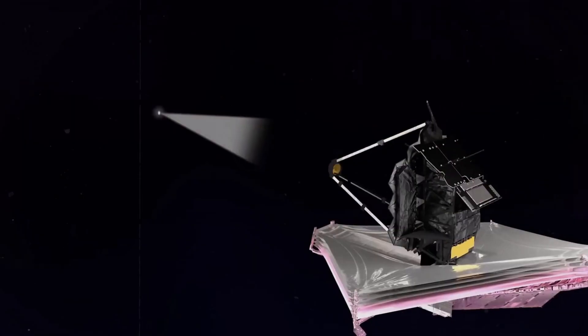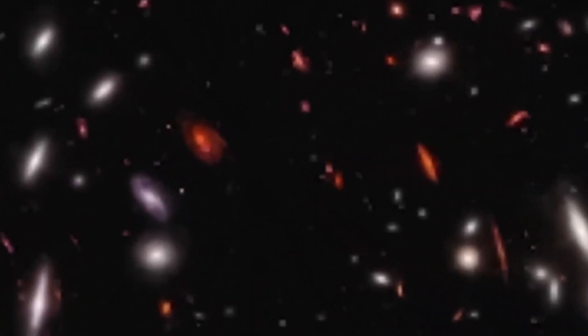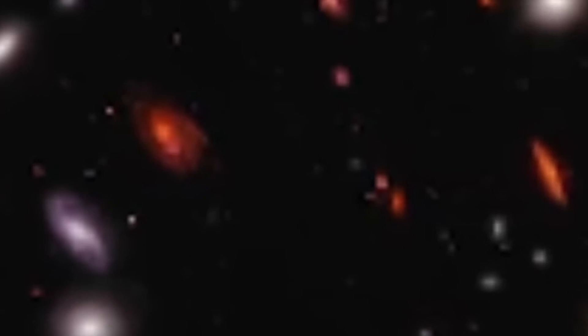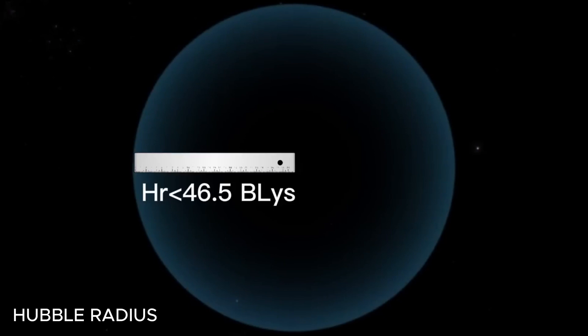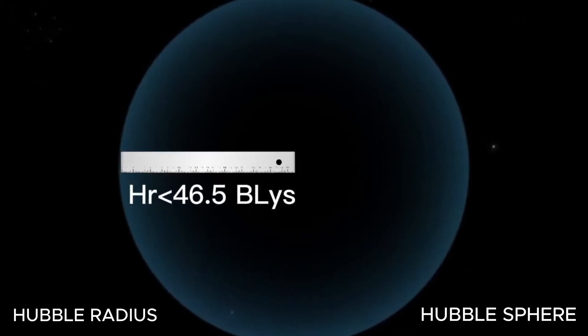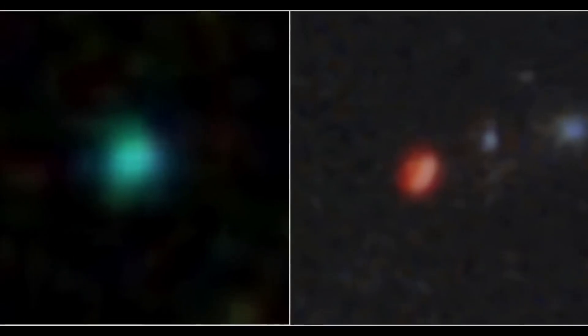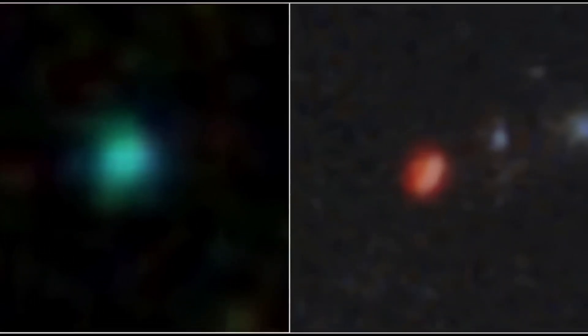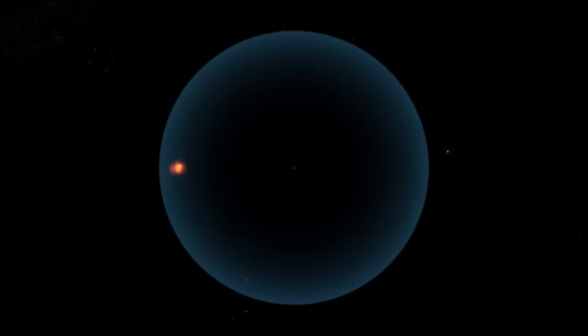We're now more certain than ever that we're on a continuous journey of discovery and the future holds surprises we can't yet predict. When the Webb telescope scans as far into space as possible, it can observe up to a distance of 46.5 billion light years. This boundary, known as the Hubble radius or Hubble sphere, marks the extent of our visible universe.